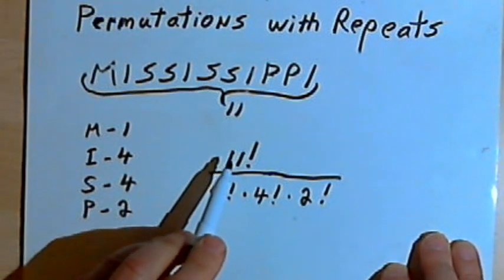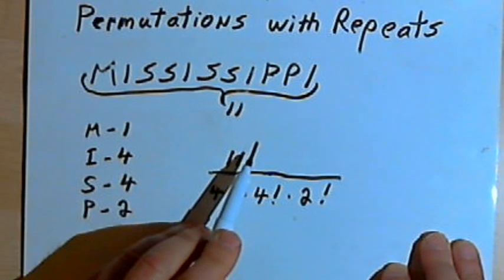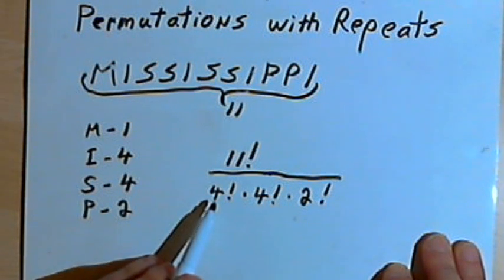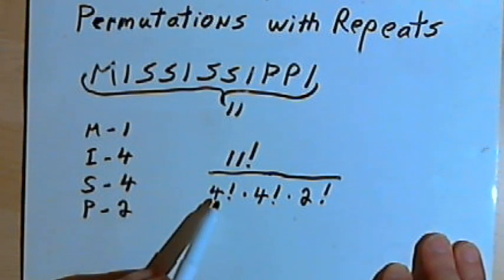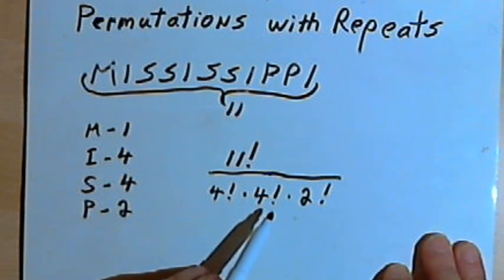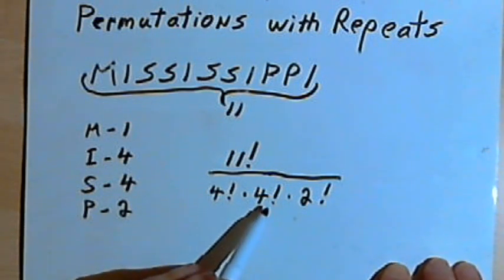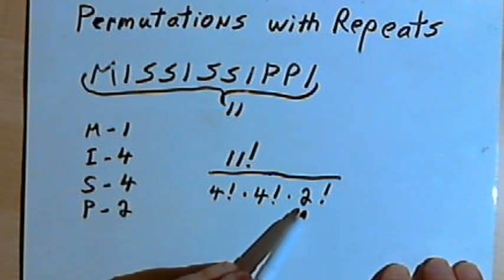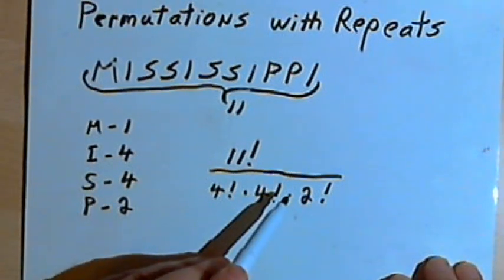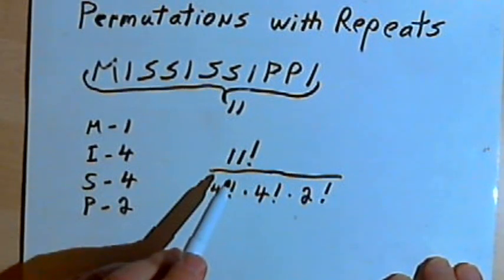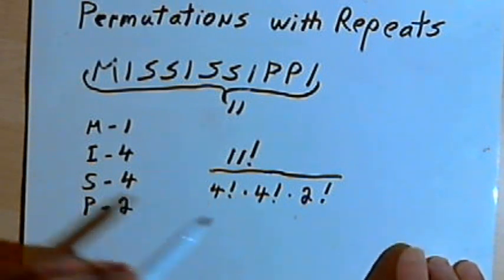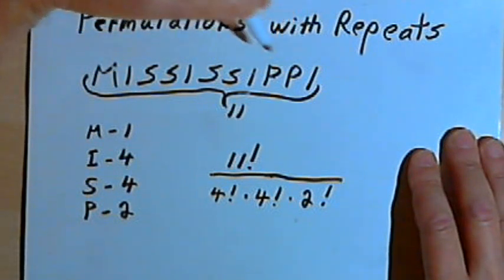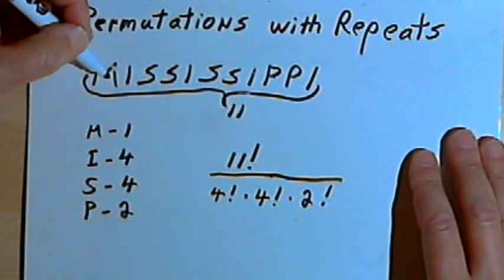I can expand this whole thing out by multiplying, for the numerator, 11 times 10 times 9 times 8 all the way down to 1. And for the denominator, I'm going to have 4 times 3 times 2 times 1 for the first 4 factorial, and then that same thing again, 4 times 3 times 2 times 1 for the second factorial, times 2 times 1 for the 2 factorial. I can do that manually, or once again I can put this in the calculator and find out what that comes to. And that would tell me how many permutations I have from all of the letters, all 11 letters in the word Mississippi.